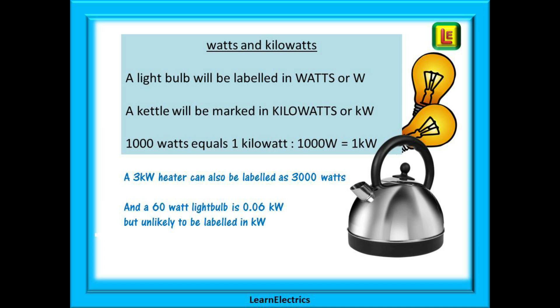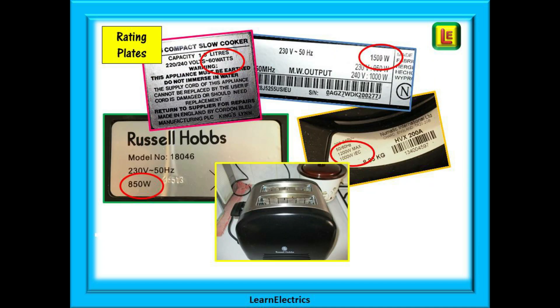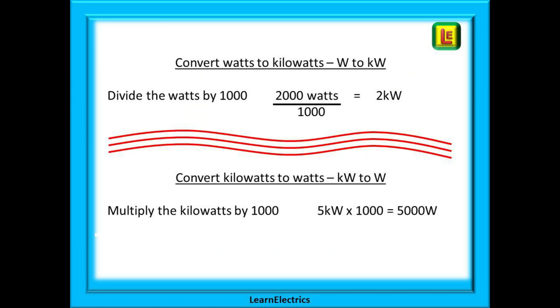A 3 kilowatt heater can also be labelled as 3000 watts, and a 60 watt light bulb is 0.06 kilowatts, but it is very unlikely to be labelled in kilowatts — it just gets too messy. Most appliances will have a rating plate or information label, and in almost every case the energy demand will be shown in watts or kilowatts. To convert watts into kilowatts, divide by 1000; to change kilowatts into watts, multiply by 1000.